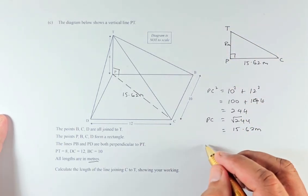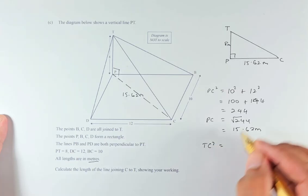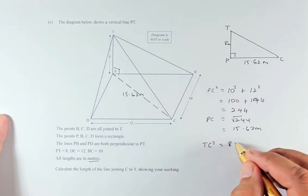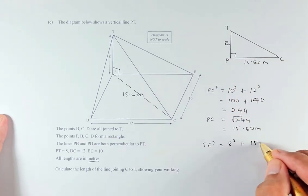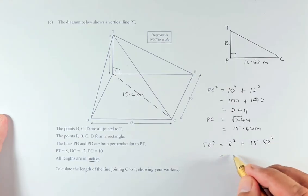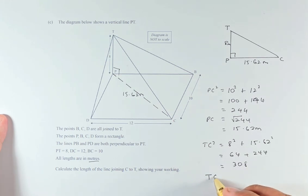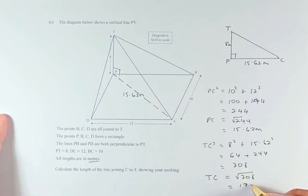So TC squared is the hypotenuse. TC squared is equal to 8 meters squared, 8 squared plus 15.62 squared. So 8 squared is 64. And we add it up together, it's going to be 308. So to find your length TC is just the square root of 308. Put in your calculator. The answer is 17.55 meters long.